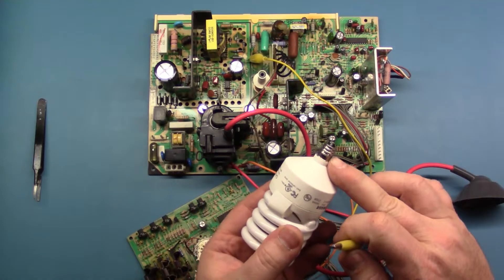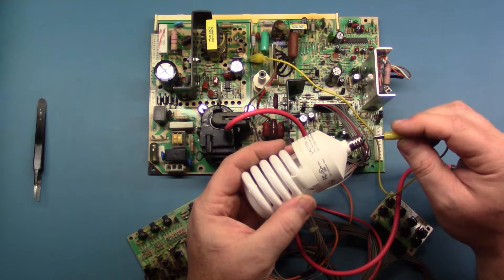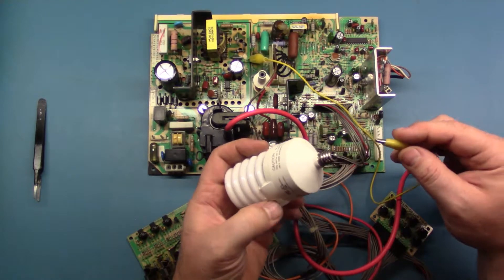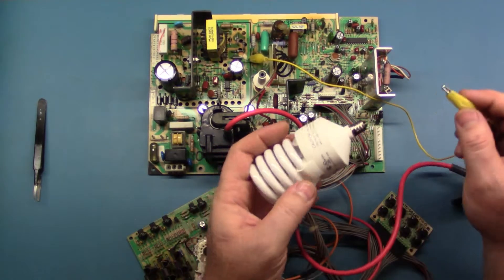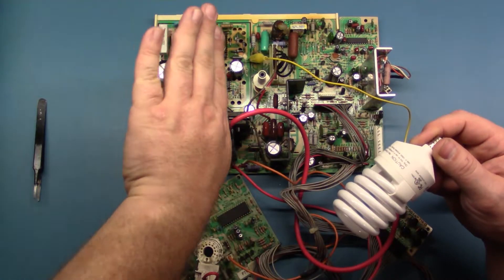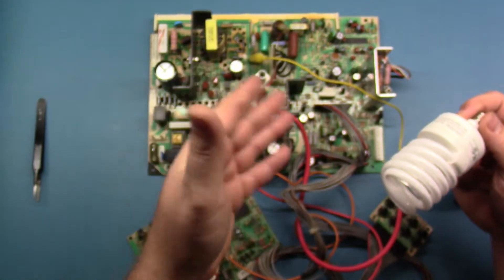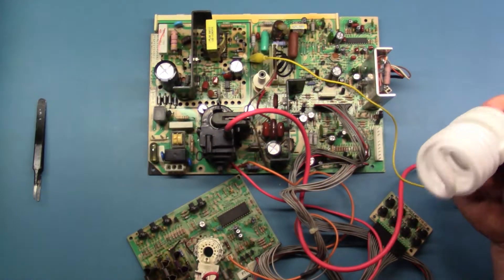And we'll touch the center of our alligator clip to the center of our light bulb, holding it on the ground. It should light up. If it lights up, then we have ruled out our power supply section and we have a problem in our horizontal section or bad caps or something.